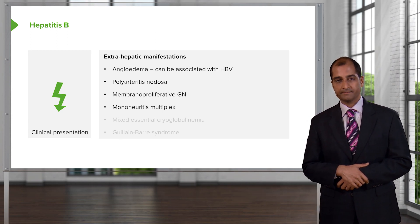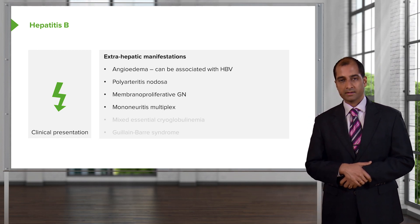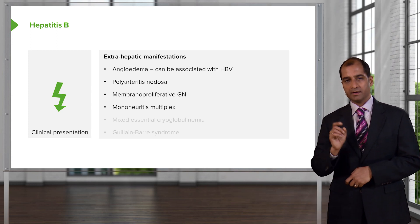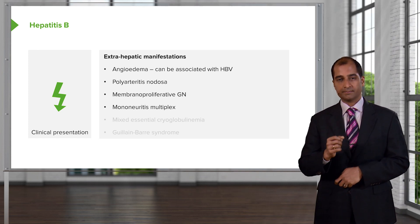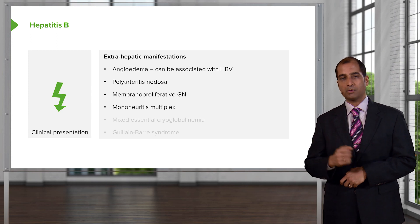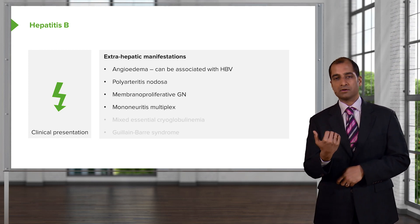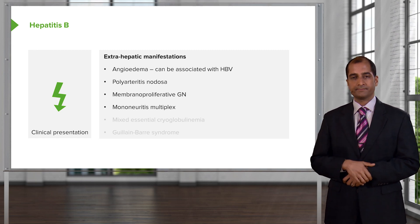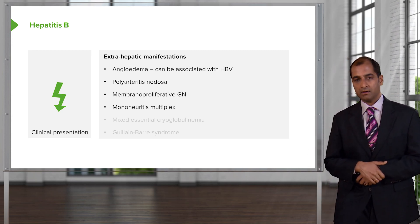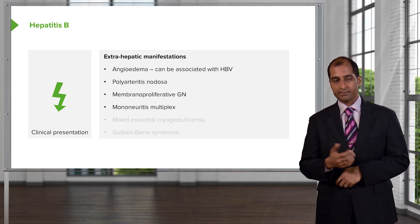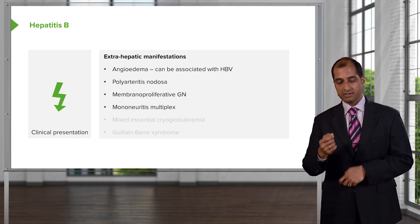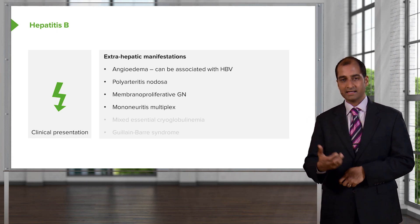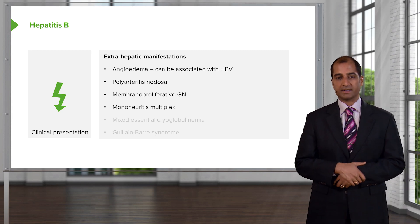Mononeuritis multiplex is another extrahepatic manifestation. This means one nerve is affected by an inflammatory process across multiple organs. Maybe it's the radial nerve — resulting in wrist drop. Maybe it's the common peroneal nerve — resulting in foot drop. One nerve affecting multiple systems, resulting in the sequelae you'd expect to see.